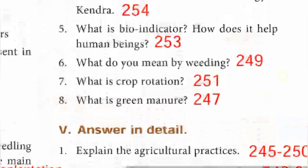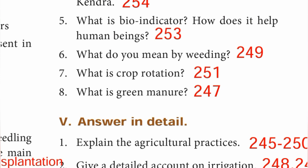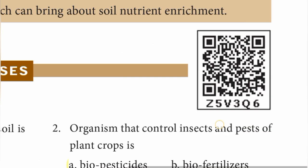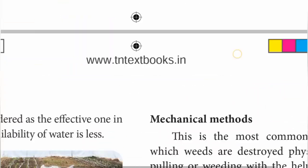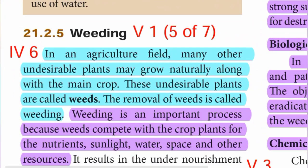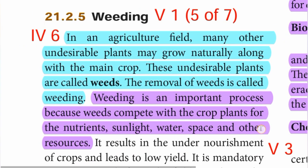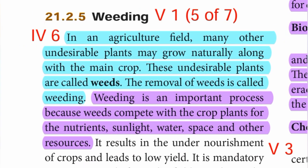Question number 6: what do you mean by weeding? Page number 249. In an agriculture field, many other undesirable plants may grow naturally along with the main crop. These undesirable plants are called weeds. The removal of weeds is called weeding.